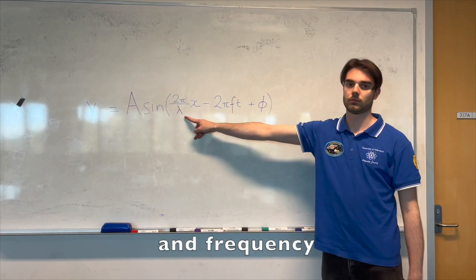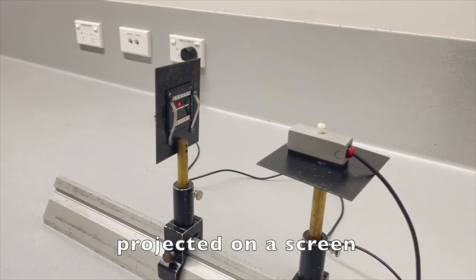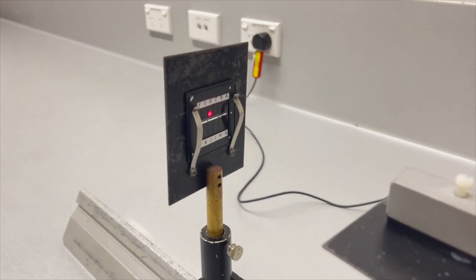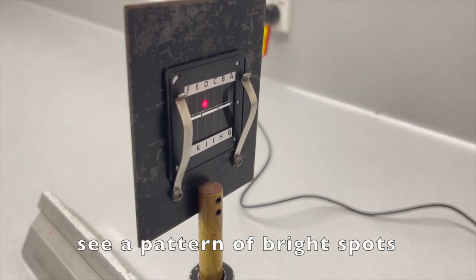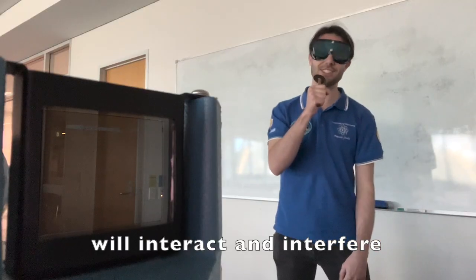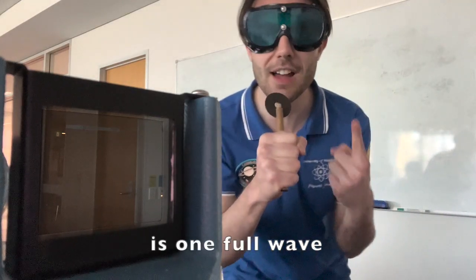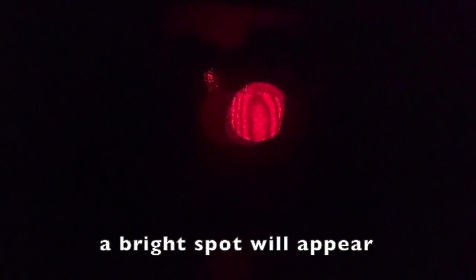Laser on a double slit projected on a screen. See a pattern of bright spots with dark spots in between. Light emitted from each slit will interact and interfere. When the path difference is one full wave, a bright spot will appear.